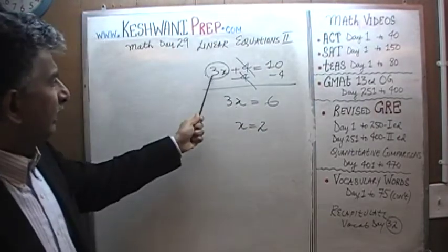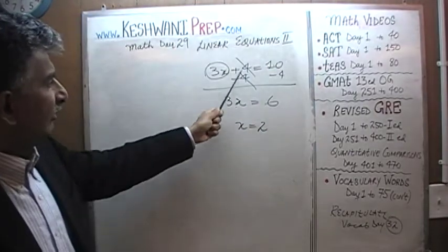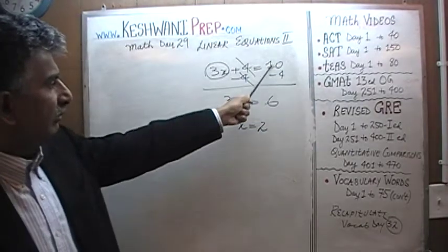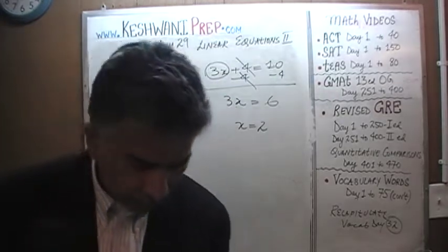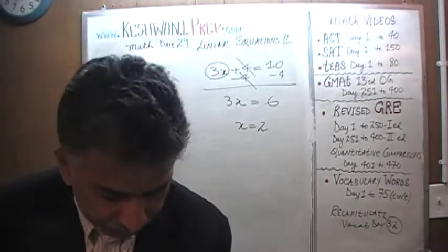And you can quickly verify: 3 times 2 is 6. 6 plus 4 is 10, which is exactly what we have here. Let's do the next one.